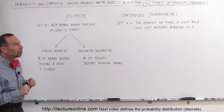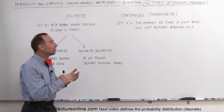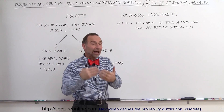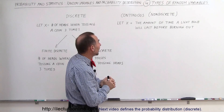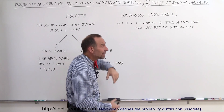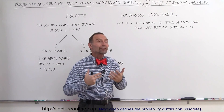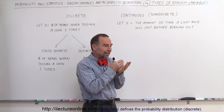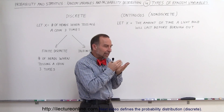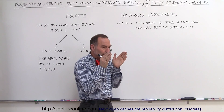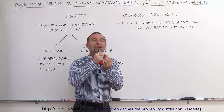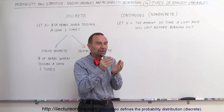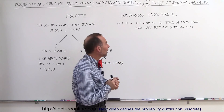We can have what we call a continuous, or a nondiscrete, random variable. In that case, x can be an infinite number of values, and the amount that it can be can be subdivided infinitely — there's no discrete value we can settle on because it could be anything in between as well.